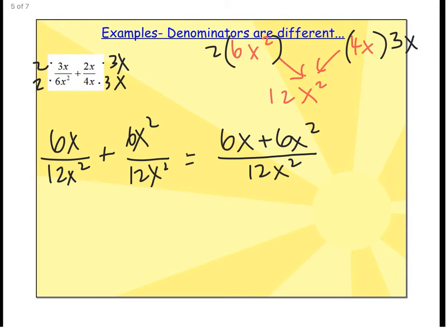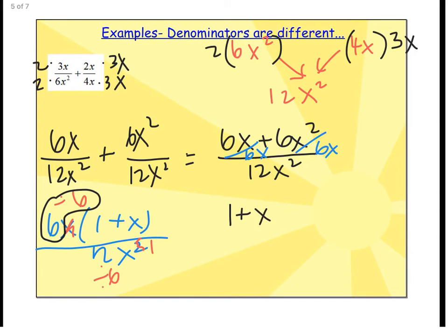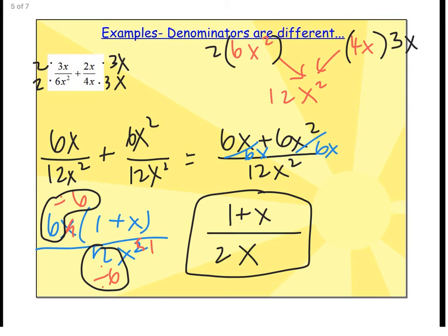Now I factor the top. It's two terms so I look for a GCF — the biggest thing I can take out is 6x, leaving 6x times the quantity 1 plus x, over 12x squared. Simplifying further: 6 and 12 both divide by 6, and the x on top cancels with one x on the bottom. That gives a final answer of 1 plus x over 2x.